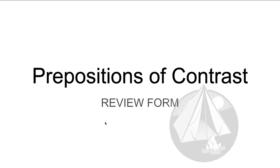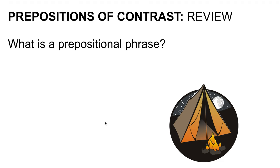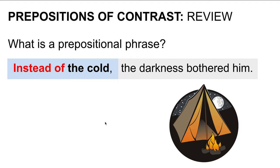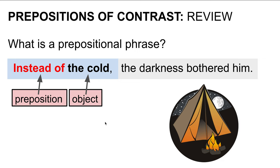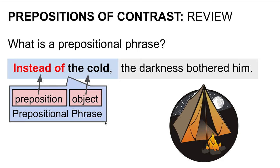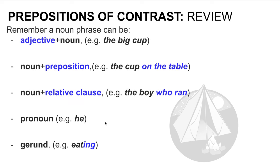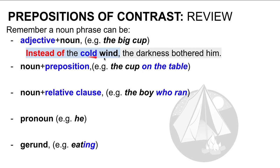Before we start, let's review the form of prepositions. What is a prepositional phrase? Instead of the cold, the darkness bothered him. A prepositional phrase has a preposition and an object — that is, a noun phrase. Remember that a noun phrase can be an adjective plus a noun. For example, instead of the cold wind — my adjective is cold, my noun is wind.